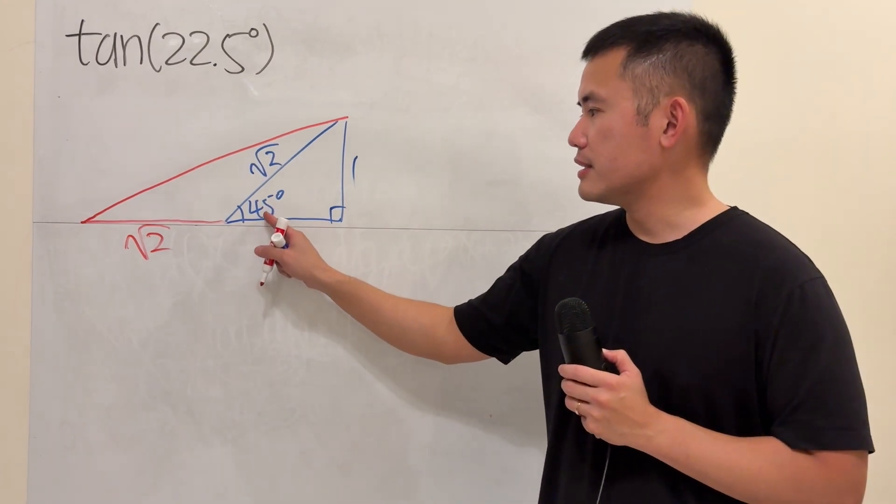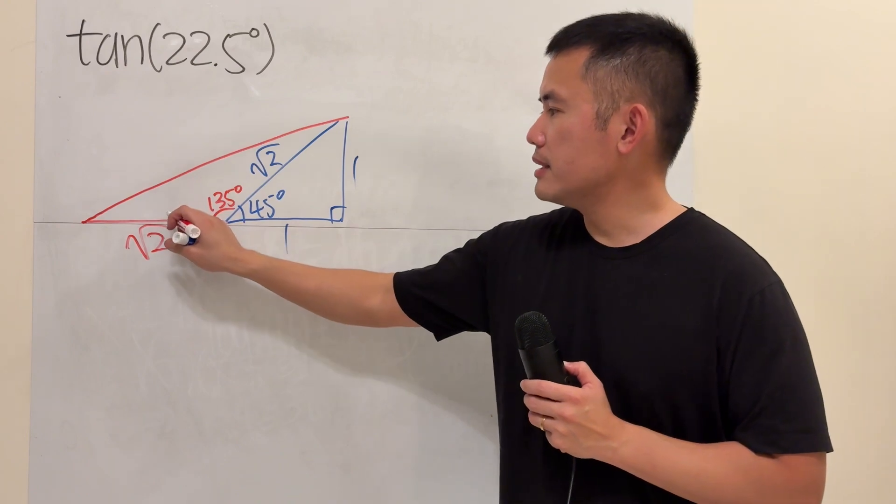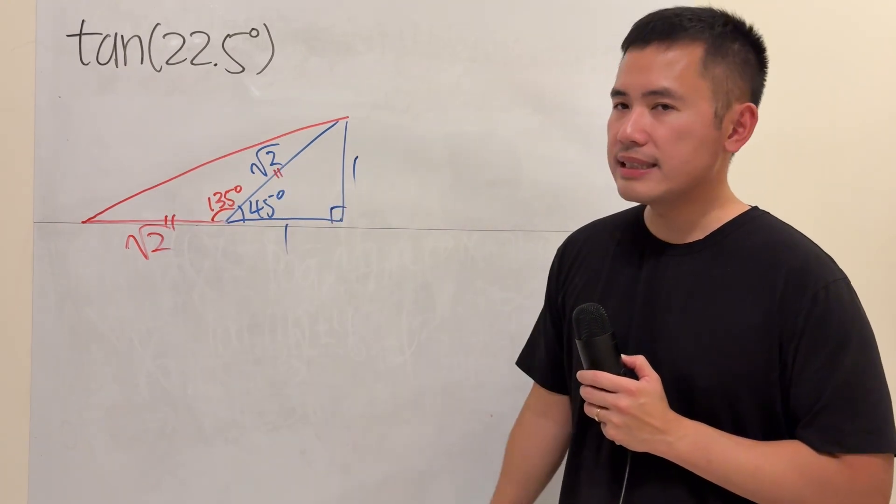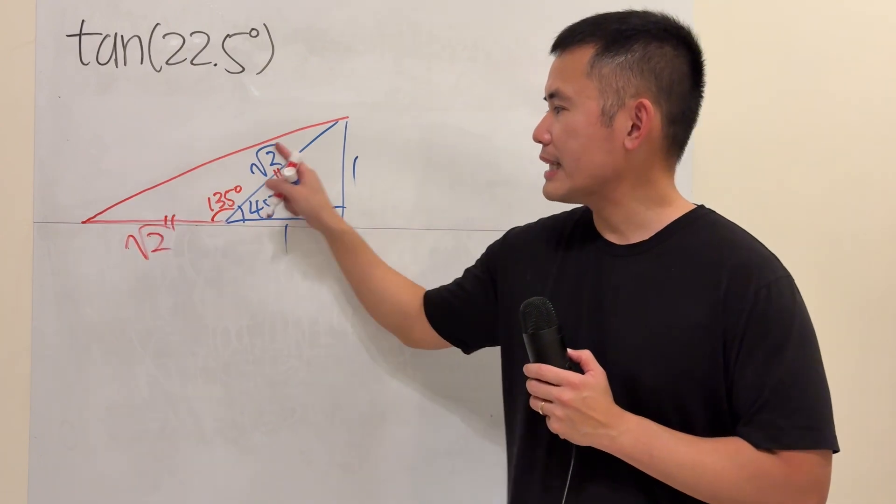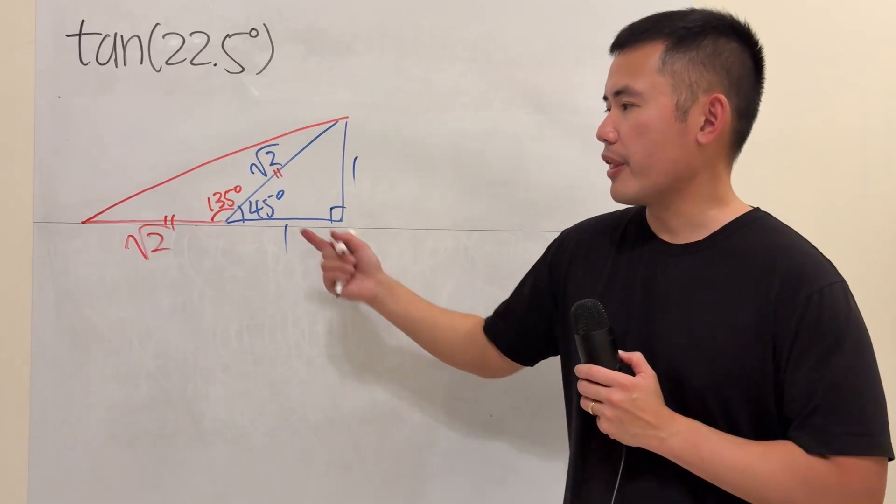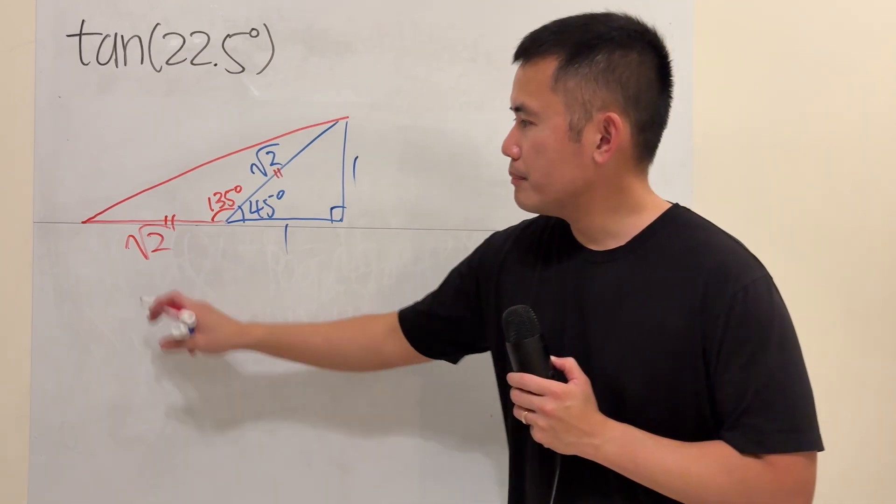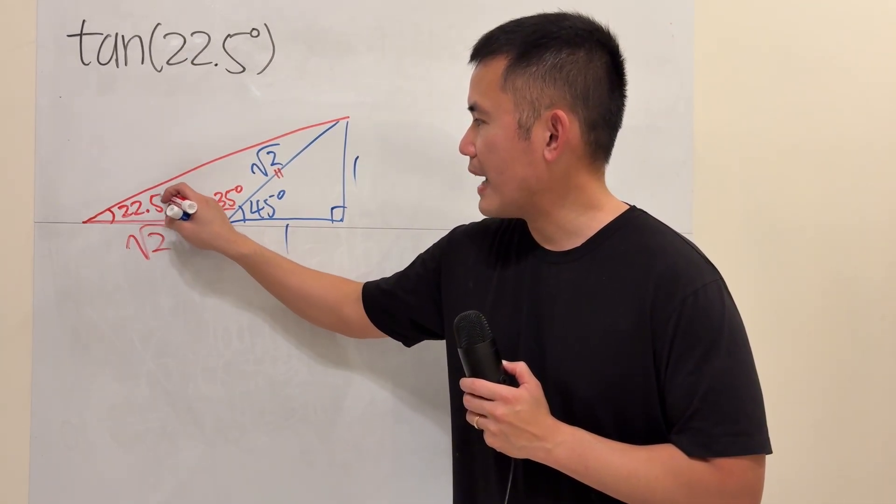Now let's do some math. This is 45 degrees. This right here is going to be 135. Because this side is equal to that side, so these two angles are equal, they will add up to 45 degrees. You can also use the exterior angle theorem. Either way, though. But this is precisely 22.5 degrees.